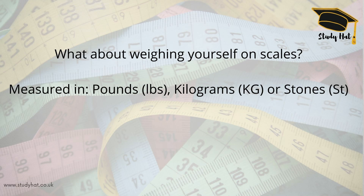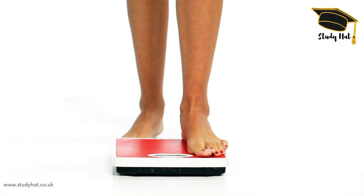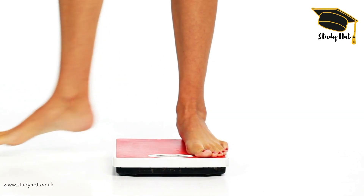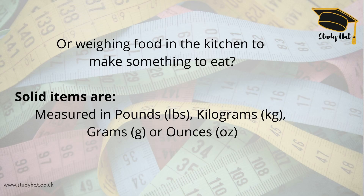Our next example of a unit of measurement is weight. What about weighing yourself on scales? Scales typically measure in pounds, kilograms, or stones. Another example for weight is weighing food in the kitchen — we measure in pounds, kilograms, grams, or ounces.